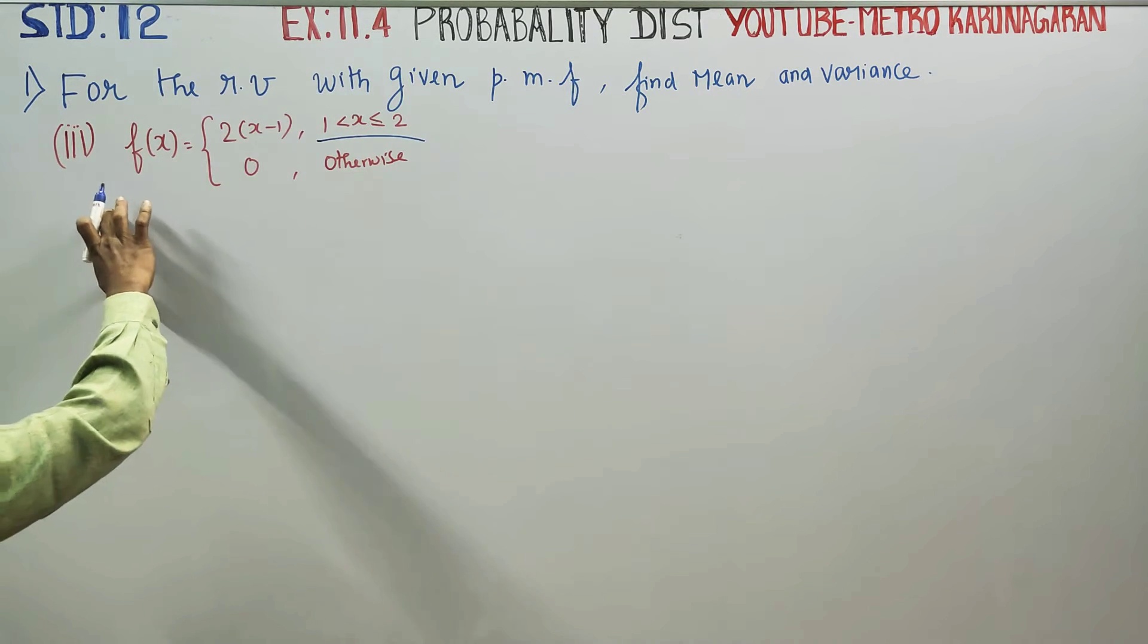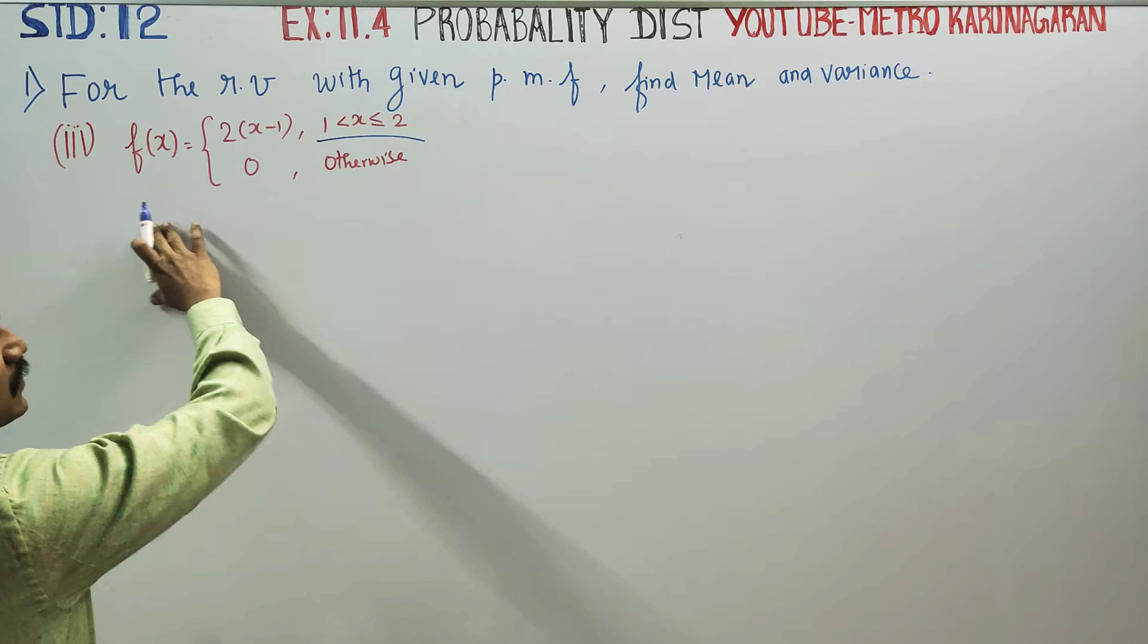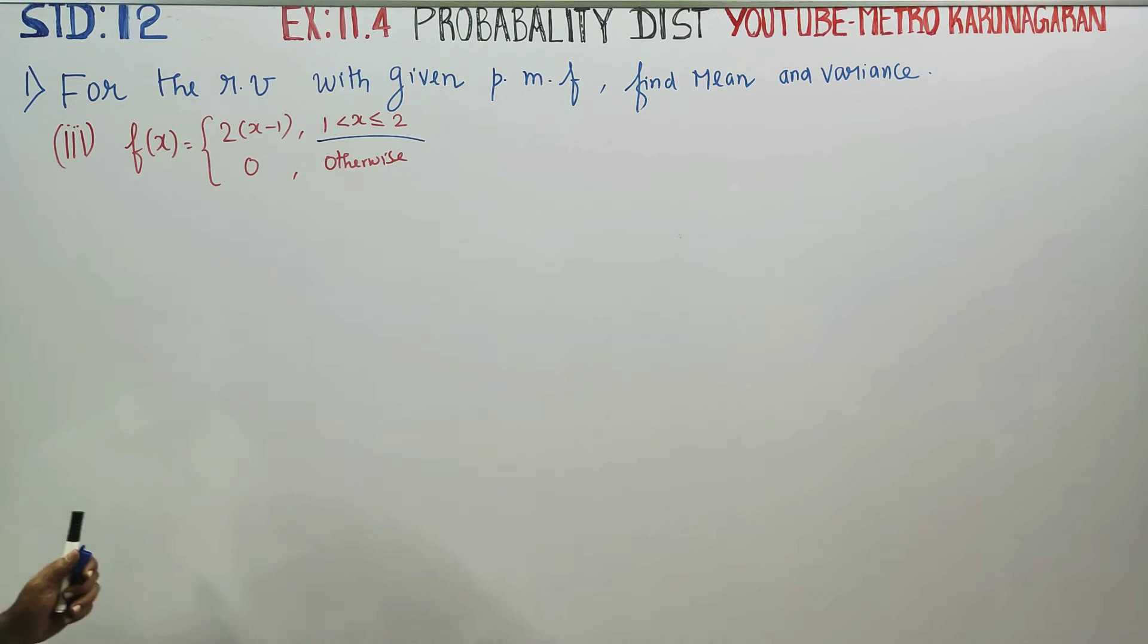You can put it in a vertical table or horizontal table. This is a continuous function where x takes exact values. It's not discrete, it's similar to continuous.